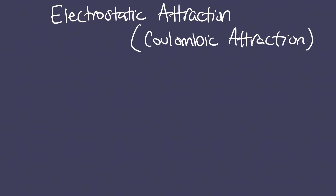So what this simply means is that if you have a proton — here's a proton — and you have an electron, here's just a representation of the two. Because the proton is positively charged and the electron is negatively charged, they create an electrostatic force of attraction. There's an attraction between the two simply because of the opposite charge.